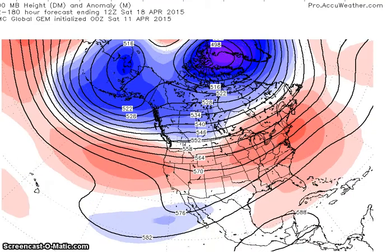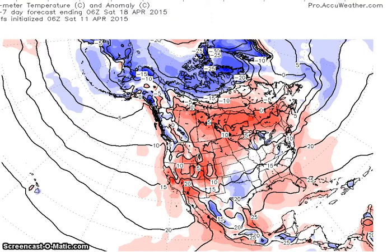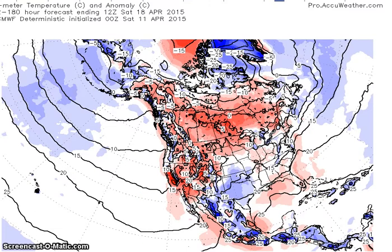We're going to look at the temperature anomaly. Temperatures are forecast to be 10 to 20 degrees above normal, except maybe the portion of the southwest.